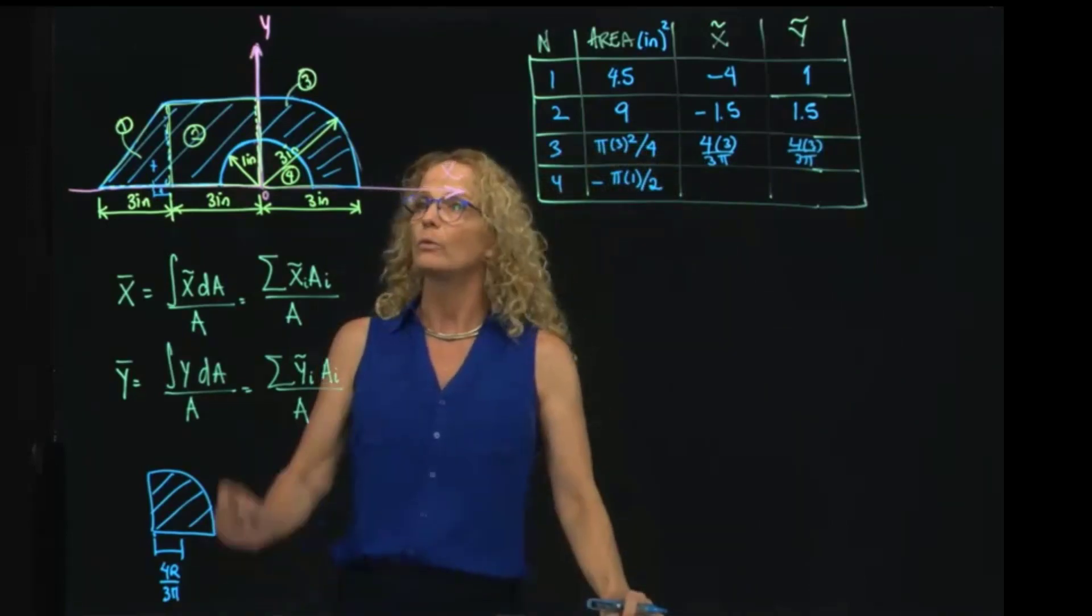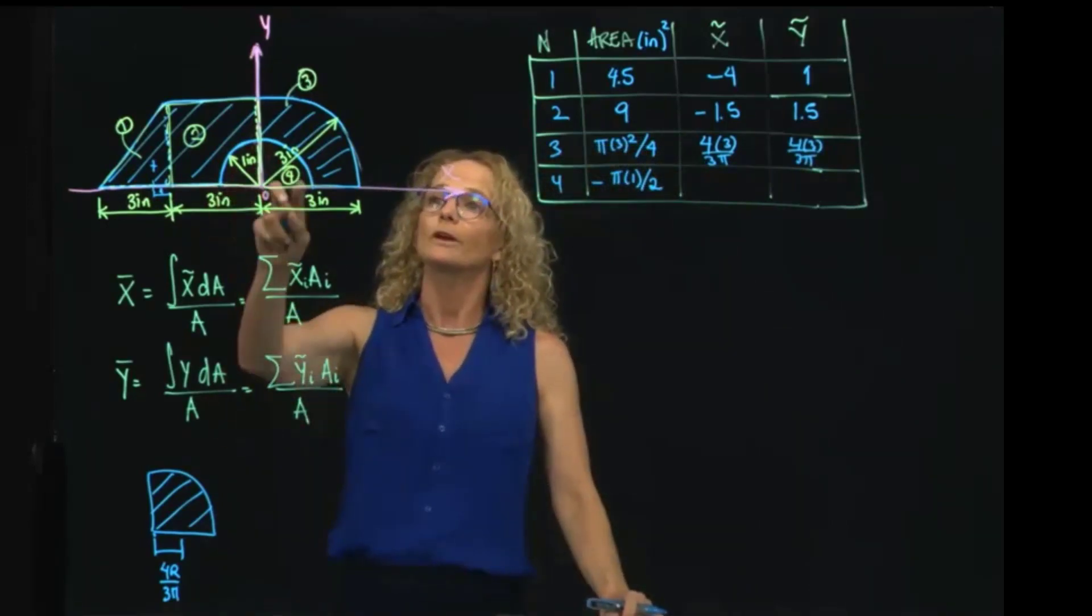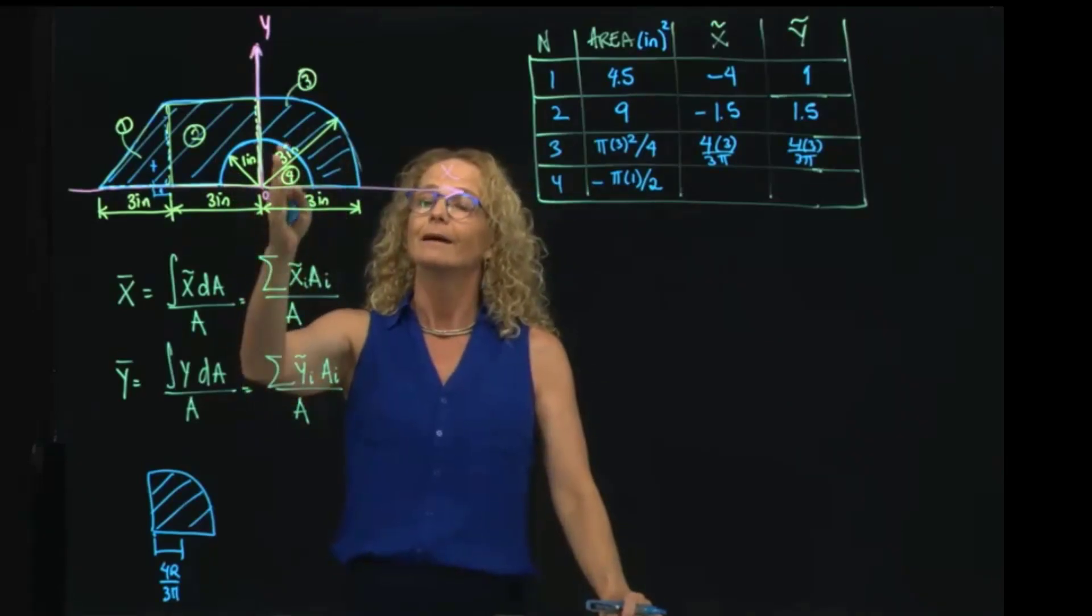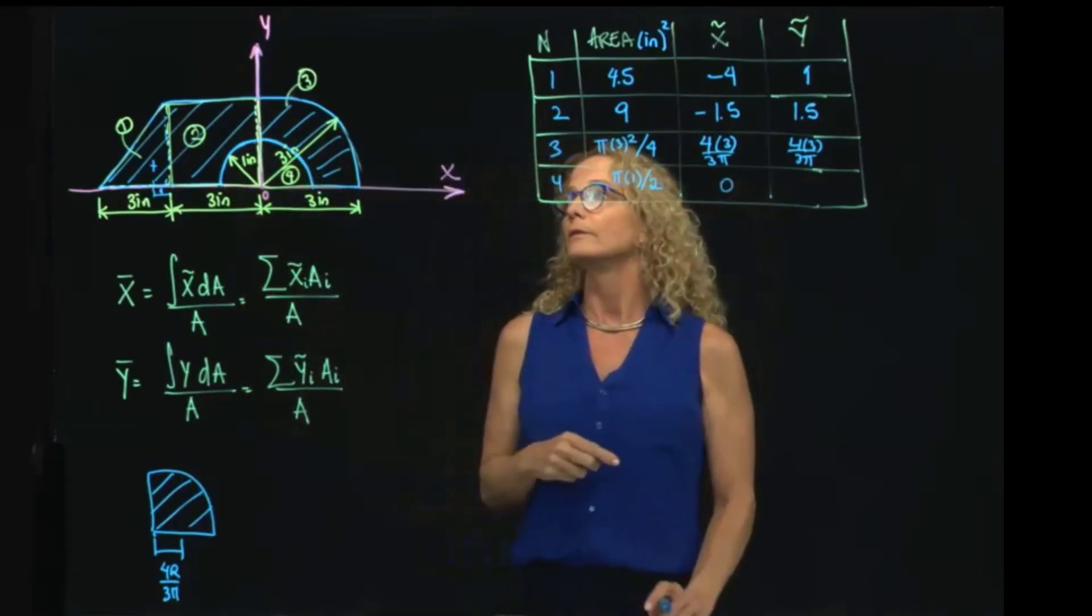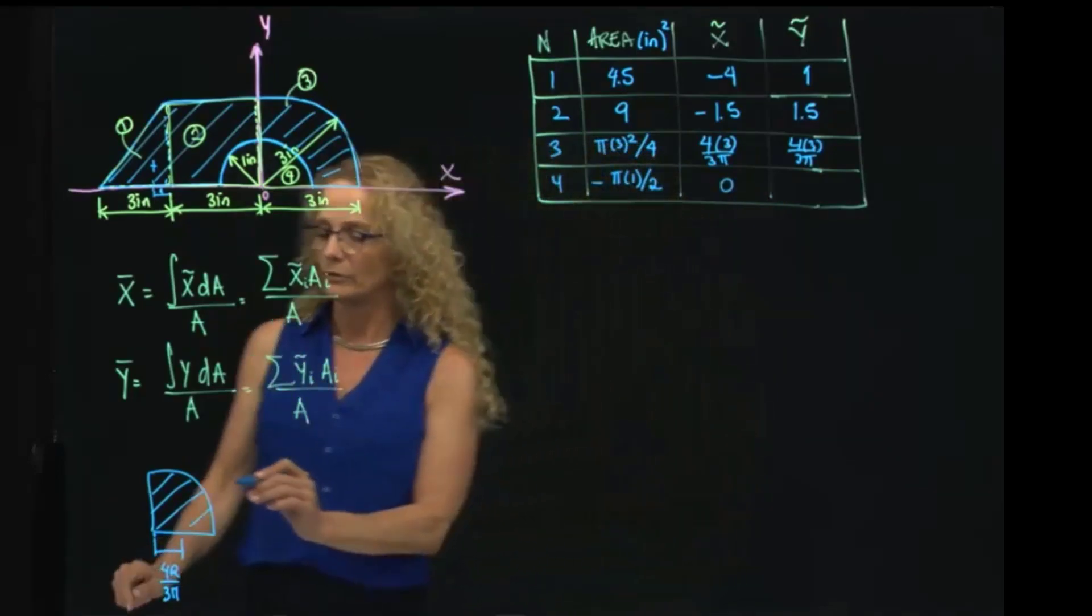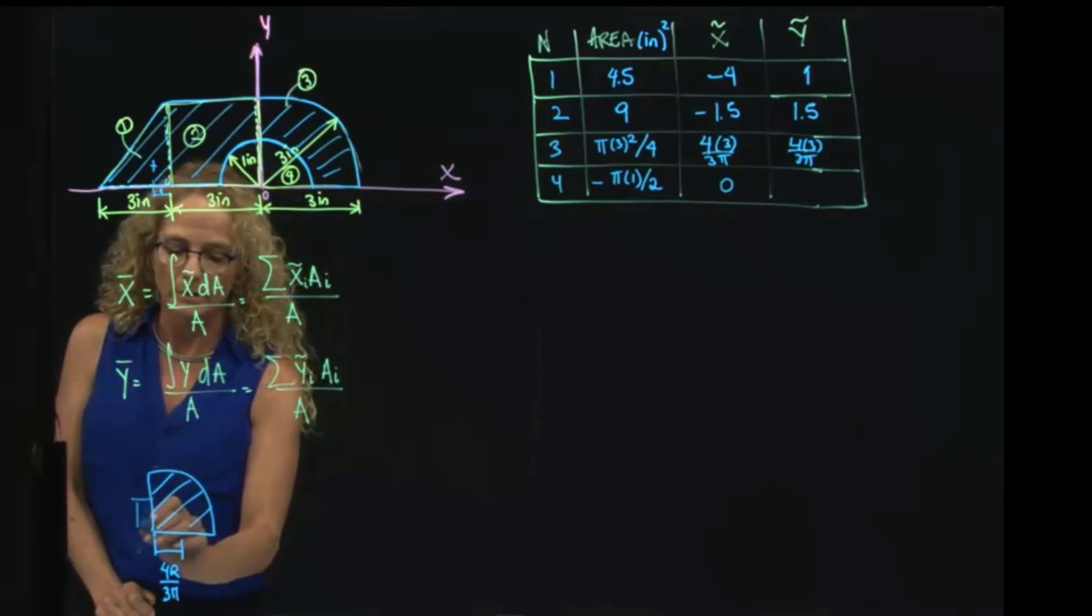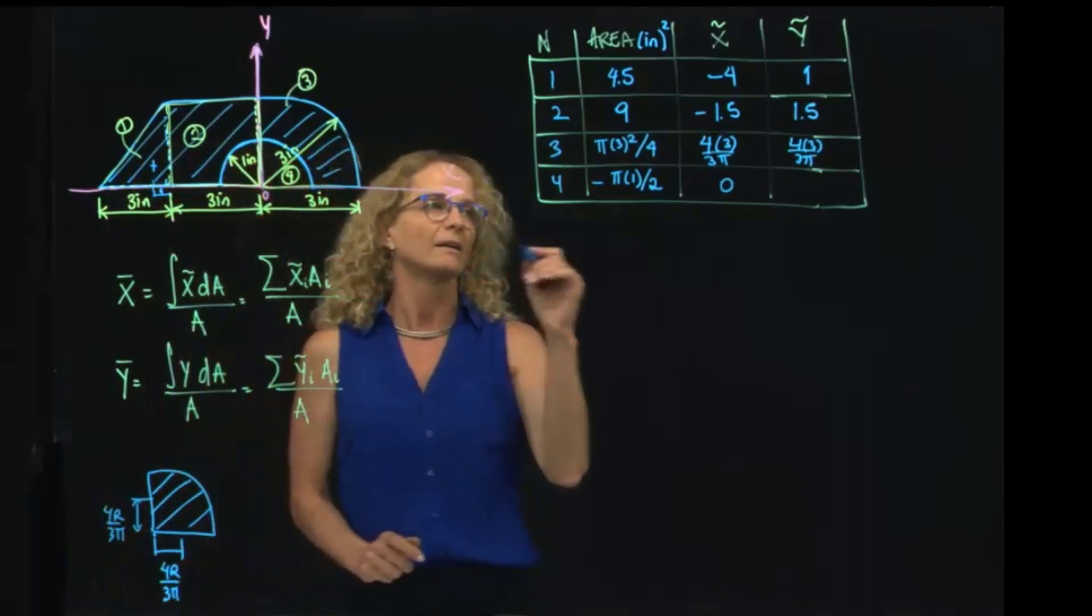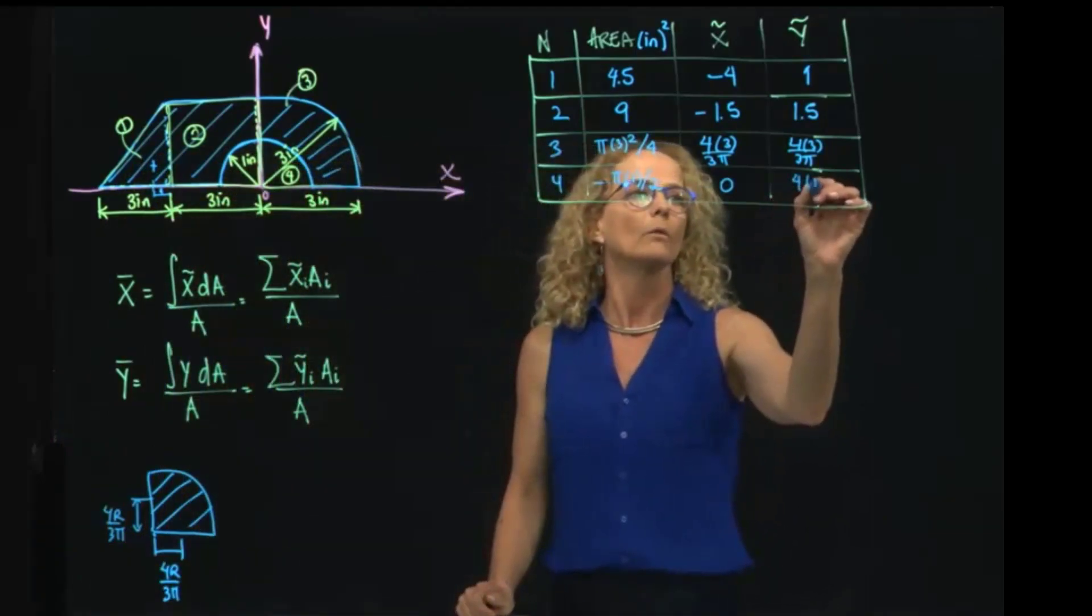Finally, we got the last one. The last one, as you see, is located actually in x at 0 because it's located exactly at my coordinate system, and the y is located at this same position. So the y here is 4r over 3π, but in this case r equals 1, so this is 1.